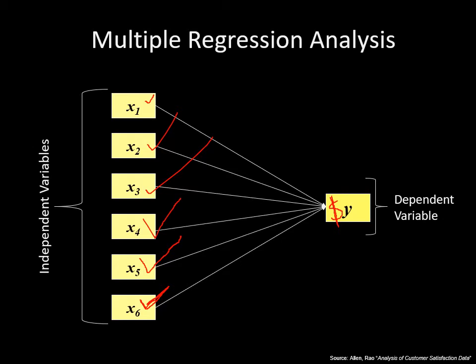One potential problem when building this model is multicollinearity. Bigger homes tend to have more bedrooms and more bathrooms, so those variables are somewhat redundant. The regression assumption states that independent variables must be independent of each other, but if house size, number of bedrooms, and number of bathrooms are all interrelated, that assumption is violated.